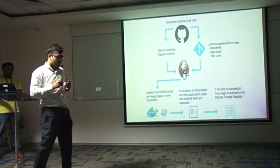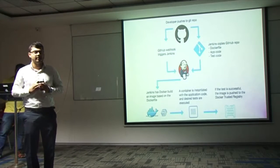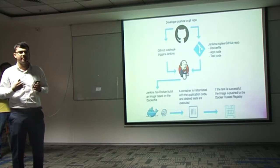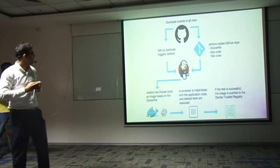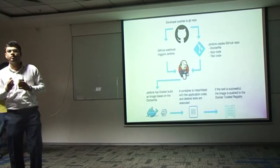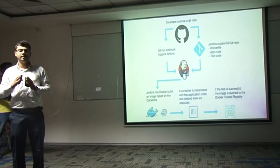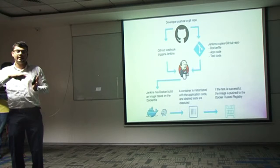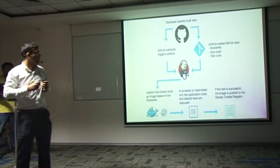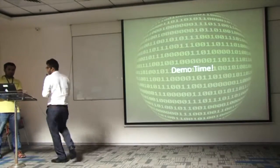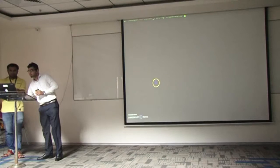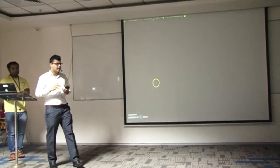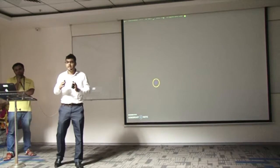This is how the overall continuous delivery pipeline looks. It starts with a push by a developer to a source code management system such as GitHub. This triggers a Jenkins job responsible for building the code. We have already integrated all our automated tests with this build job, and if all tests get green we move forward with the deployment process. Let me show a demo of how to create a Docker image for deployment and integrate automated tests with the build job.